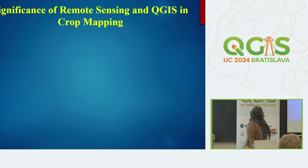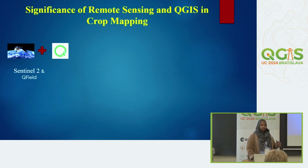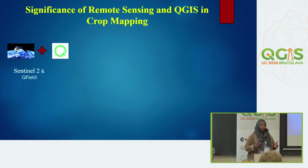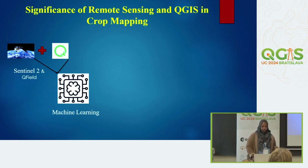I use Sentinel-2 images and QField to collect training samples from the field — basically inputting GPS coordinates and observations of what's cultivated. Because it was a very large irrigation scheme, we focused on four main regions, dividing the scheme into four main regions and collecting a limited amount of training data from each. I then used Google Earth Engine and the SmileForest algorithm to train the machine learning model to identify crop maps based on the training data and remote sensing images.